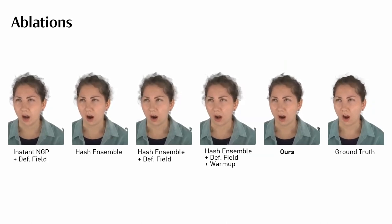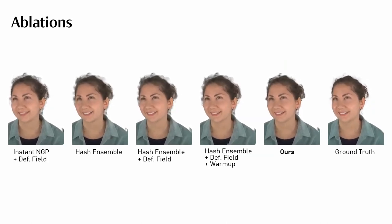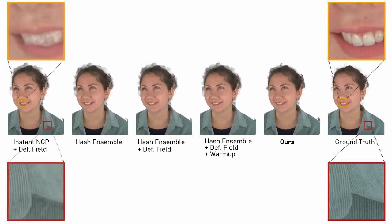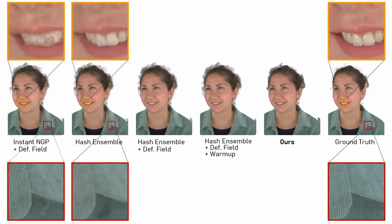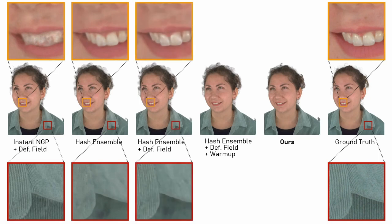Here, we ablate the different components of our model. Combining instant-NGP with a deformation field can produce sharp detail in rigidly moving areas of the scene, but struggles with more challenging motion. On the other hand, employing an ensemble of hash encodings can better deal with complex motions, but generally produces blurrier reconstructions. Combining both components leverages the strengths of these architectures, but still does not achieve sharp detail in some areas.